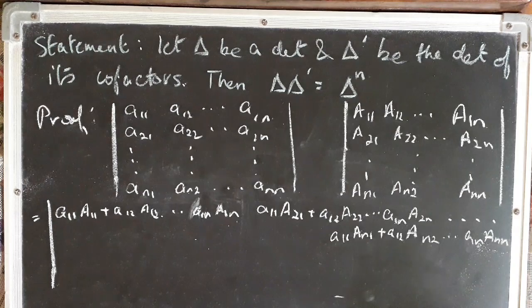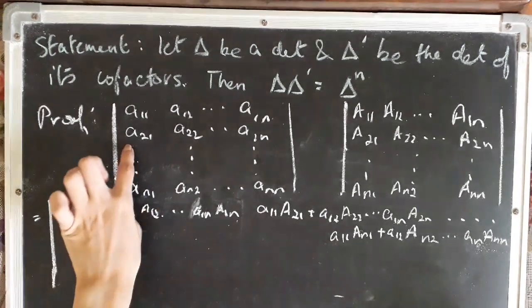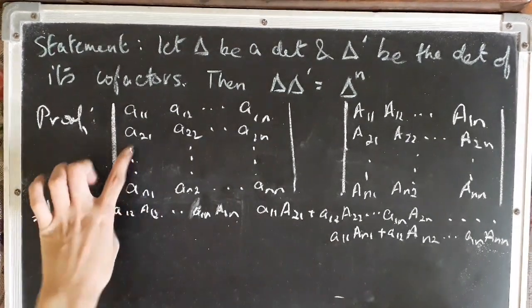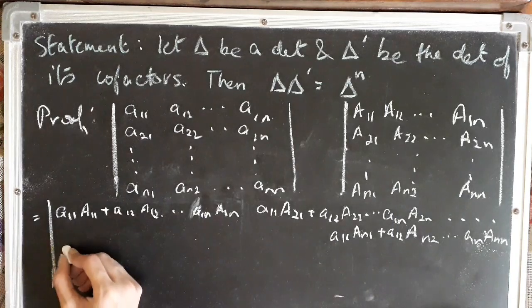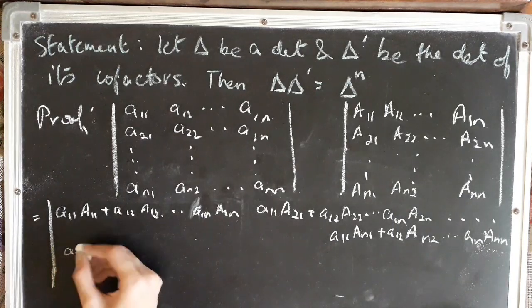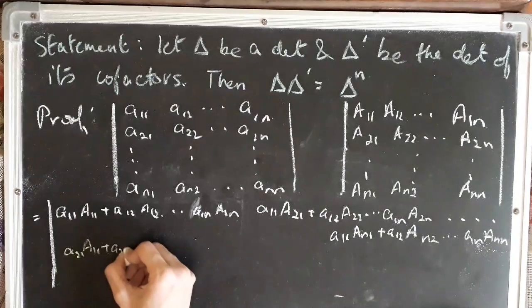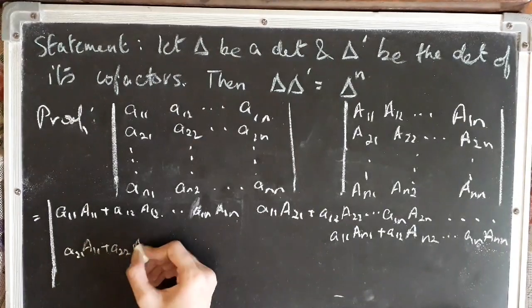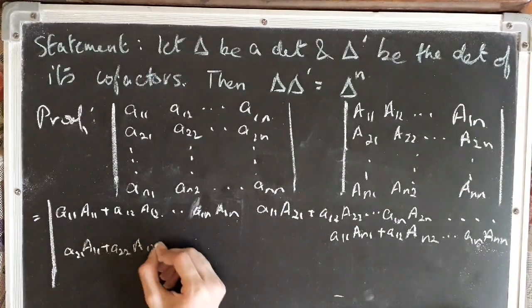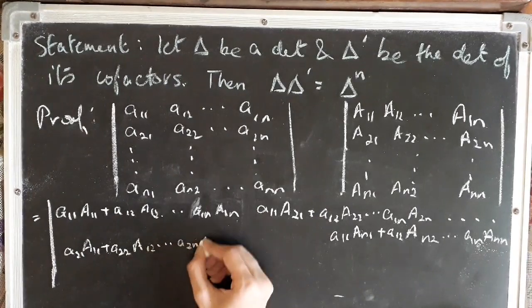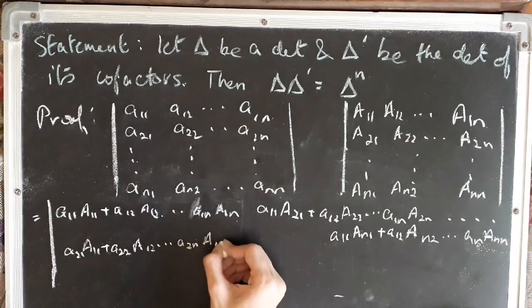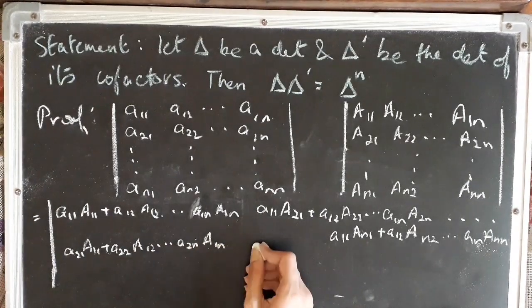Similarly, we proceed with the second row of delta. We get the (2,1) element as a21·A11 + a22·A12 + ... + a2n·A1n.